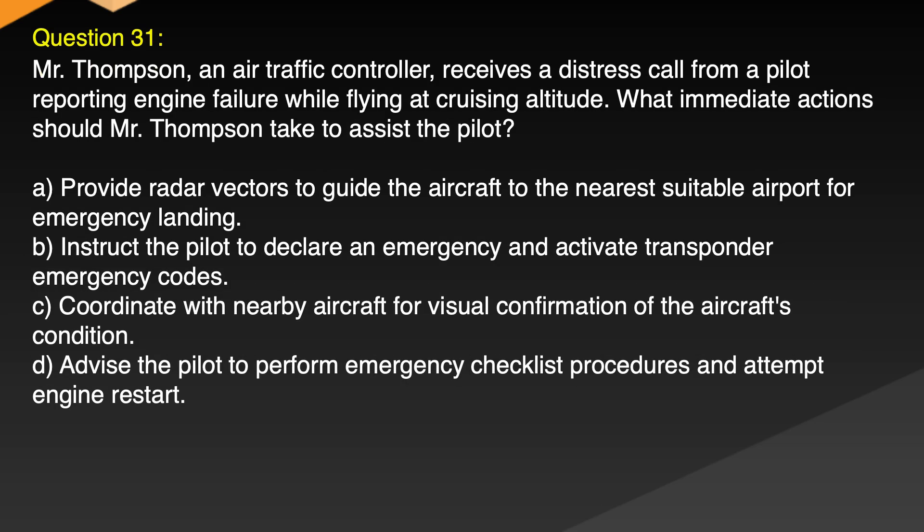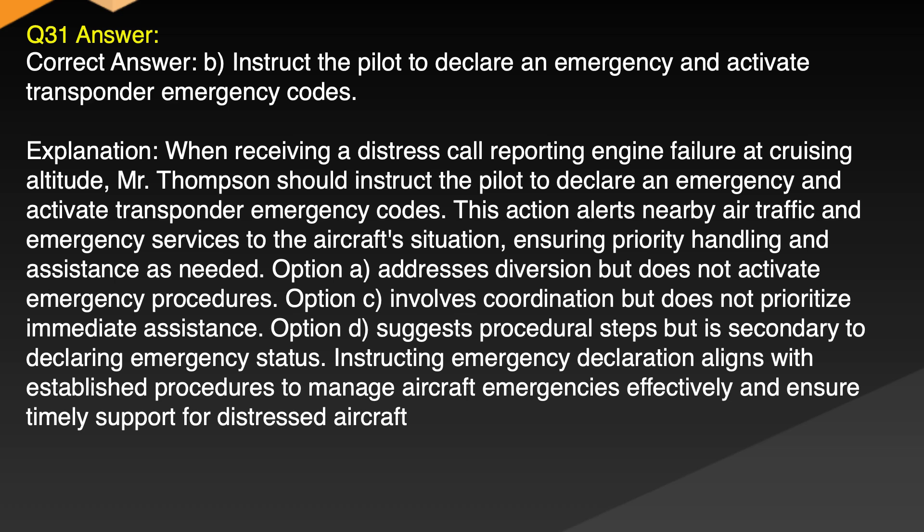Question 31. Mr. Thompson, an air traffic controller, receives a distress call from a pilot reporting engine failure while flying at cruising altitude. What immediate actions should Mr. Thompson take to assist the pilot? A. Provide radar vectors to guide the aircraft to the nearest suitable airport for emergency landing. B. Instruct the pilot to declare an emergency and activate transponder emergency codes. C. Coordinate with nearby aircraft for visual confirmation of the aircraft's condition. D. Advise the pilot to perform emergency checklist procedures and attempt engine restart. Correct answer: B. Instruct the pilot to declare an emergency and activate transponder emergency codes.